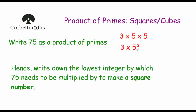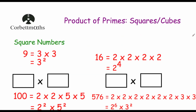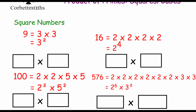Before we do that, let's look at some square numbers. We've got 9, which is equal to 3 times 3; 16, which is 2 times 2 times 2 times 2, or 2 to the power of 4; 100, which is 2 times 2 times 5 times 5, or 2 squared times 5 squared; and 576, which is 2 to the power of 6 times 3 squared.